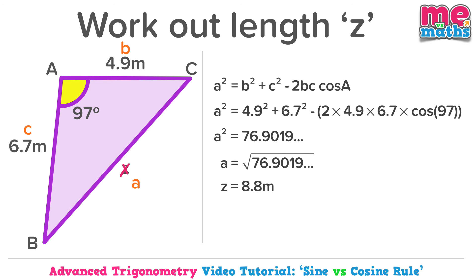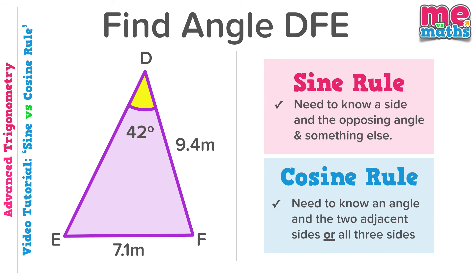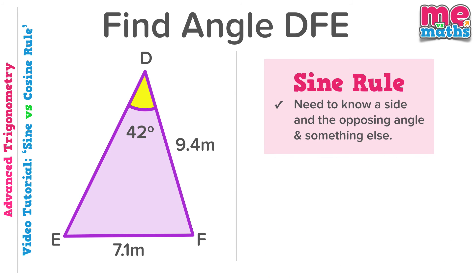One final example for us to look at. We've used this as a final example, because actually neither rule will allow us to find angle DFE, which is the one at the bottom right hand corner of the triangle, in one go. But we do have the information that we need to be able to use the sine rule, as we know a side and the angle opposite. So we can use that to actually find angle DEF, the one at the bottom left hand corner, first of all.